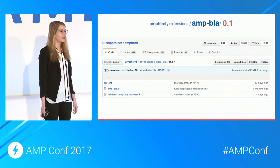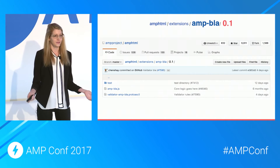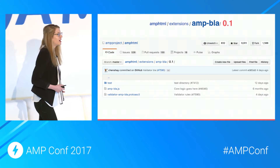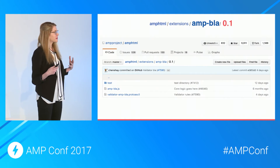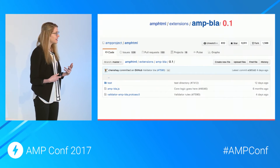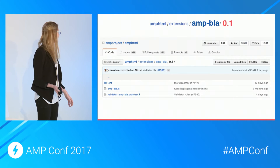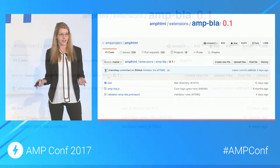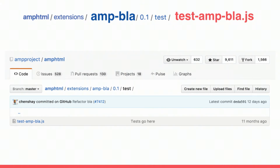Inside the 0.1 directory, you're going to have a validator file with the validator rules that ensure other developers are creating your page correctly. You'll also have a JavaScript file with all the core logic, and then a test directory where you put all of your tests.